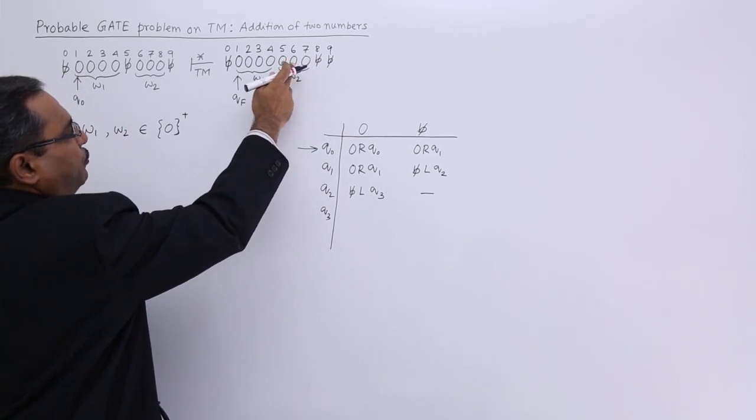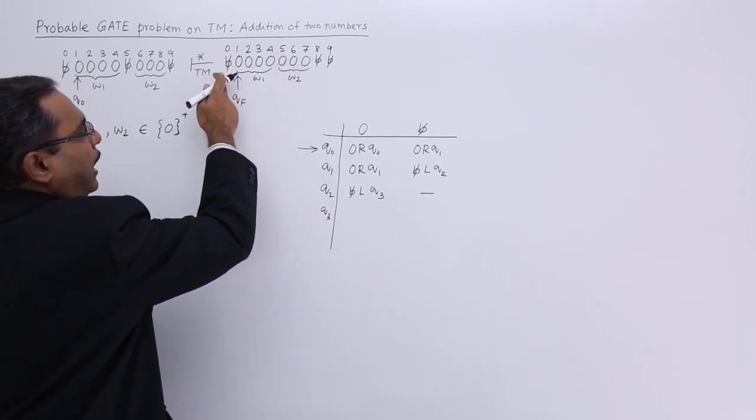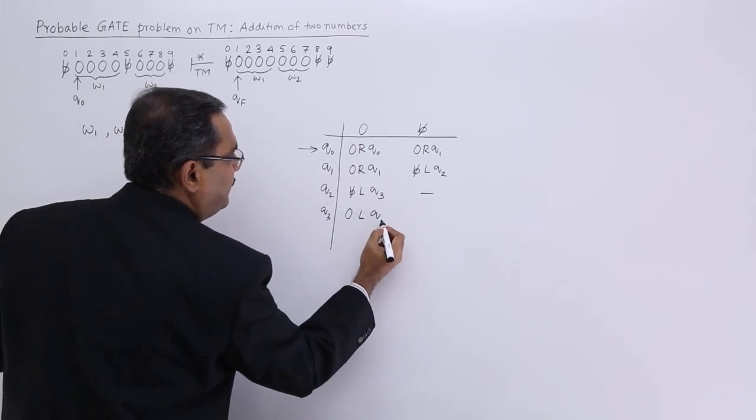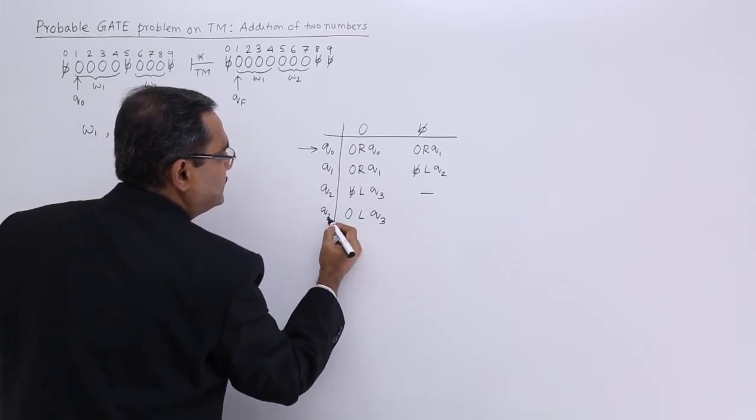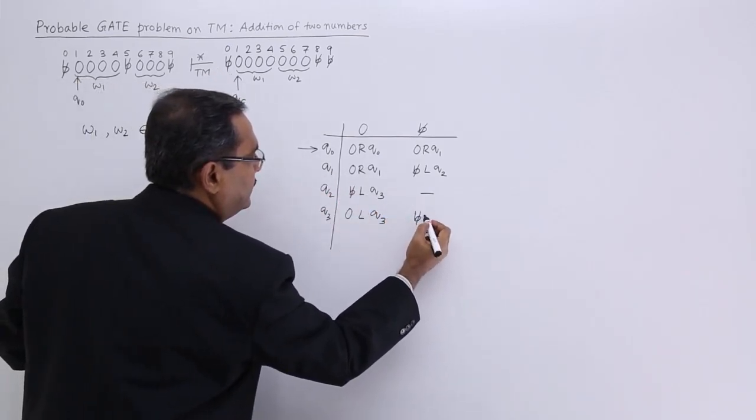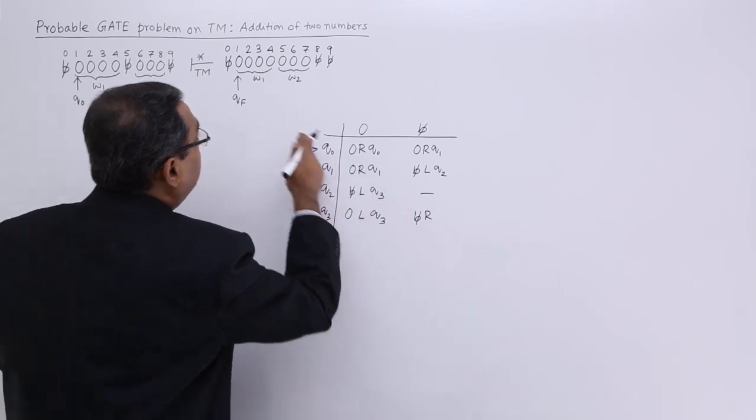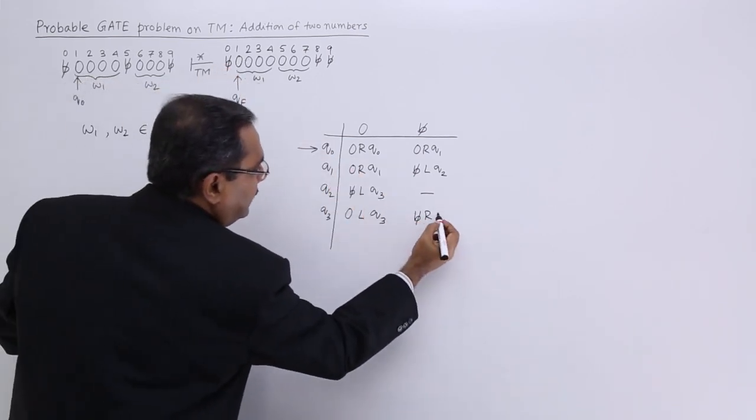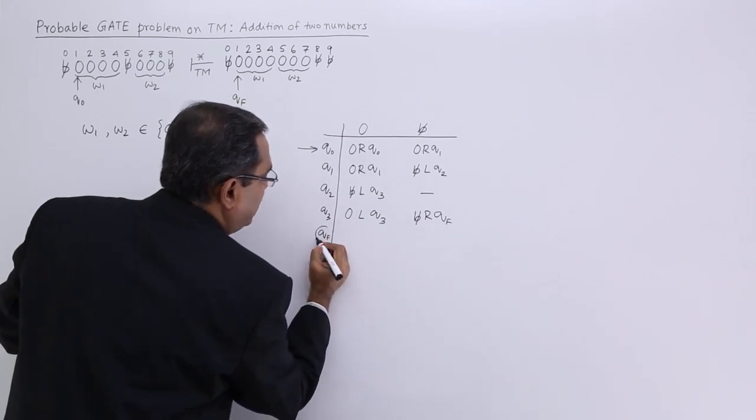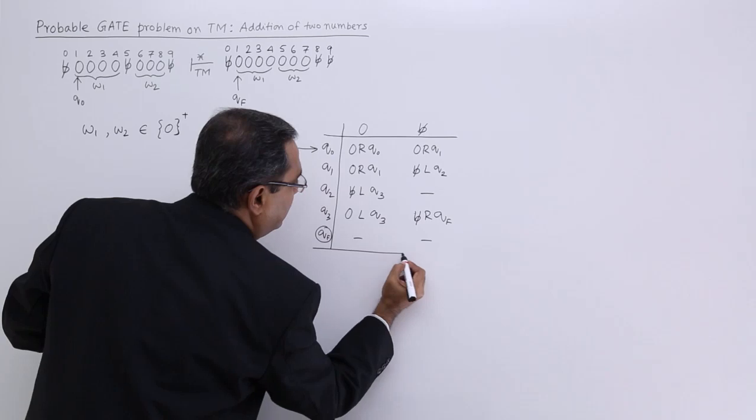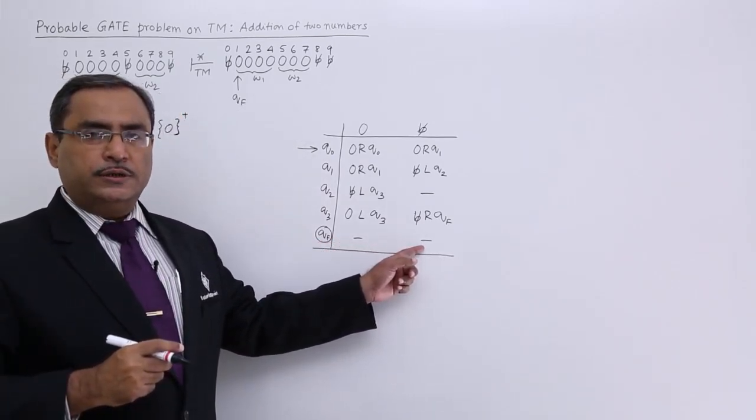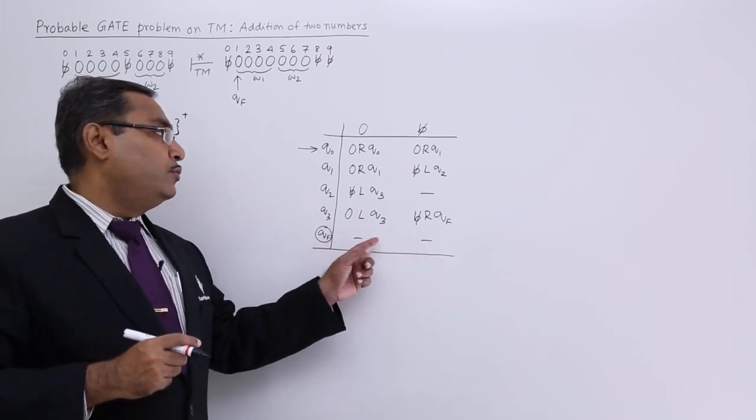Q3 will just march over these 0s until it gets a blank. If it gets 0s it will move to the left hand side keeping that 0 there keeping the state same. But if I get blank here then it will write blank there then it should move to the right. After getting this blank it will move to the right and then it will get QF. QF is my final state and I am making my machine halt because for QF I am not defining any transitions for this input 0 and blank.